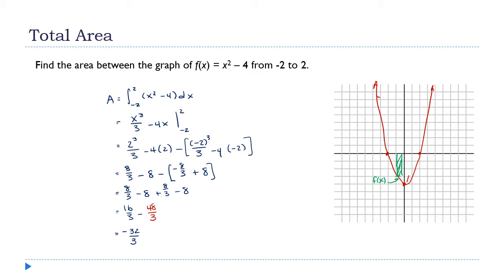This is why, in all the previous examples, I was very meticulous about saying 'if f(x) is positive' — I was dodging this case until we were ready to talk about it. Now it's easy to fix: areas are always positive, so all I'm going to do is take the absolute value of everything, and I get my final answer of positive 32/3.